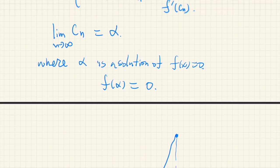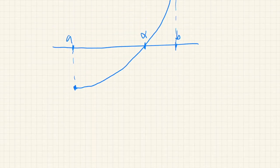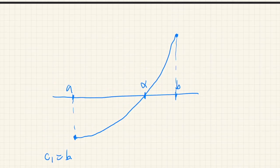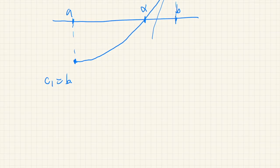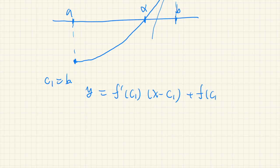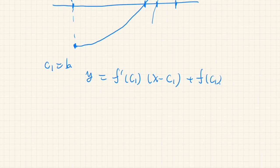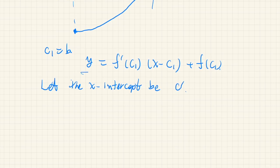We set C1 to be b — that's our initial guess. Let's find the tangent line at this point. The equation of the tangent line is y equals f prime of C1 times (x minus C1) plus f of C1. Then we find the x-intercept of this tangent line — let's call it C prime.